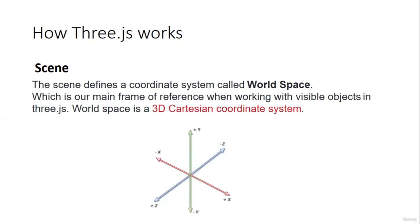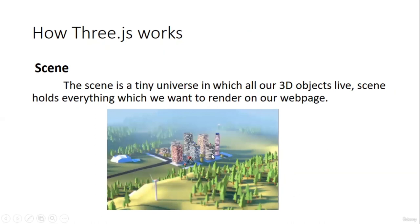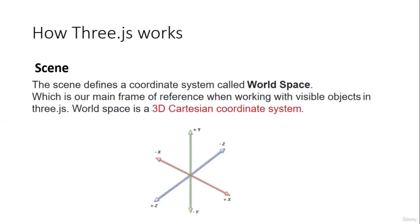World space is our main frame of reference when working with visible objects. Using points in this coordinate system, we can easily place any 3D object in the scene — like a building, windmill, or tree. We are going to discuss more about it when we do practical things. Next is camera. Camera works as the eye to see the tiny universe, which is our scene, in which we have placed objects.